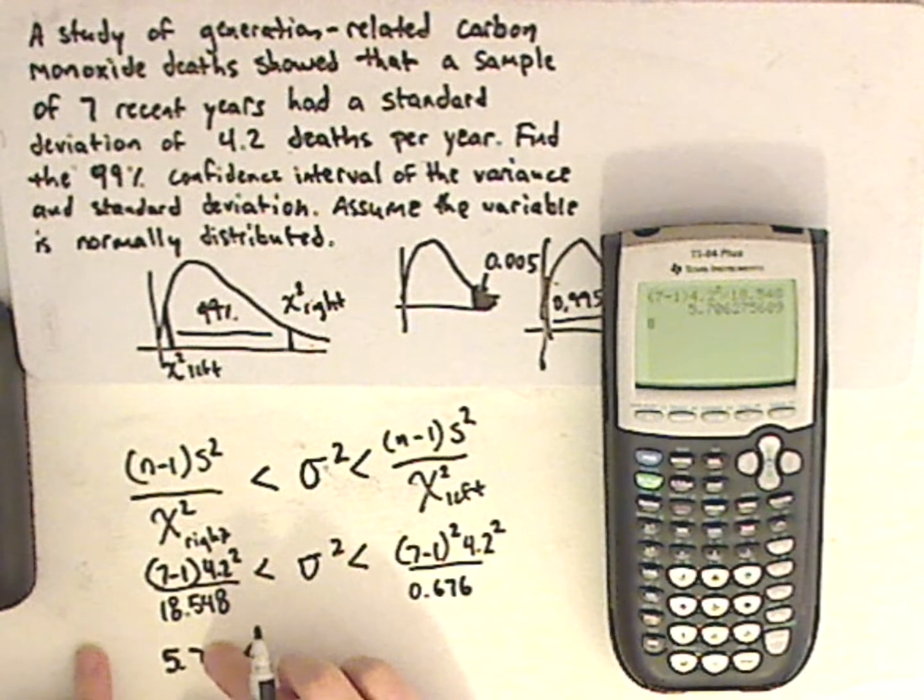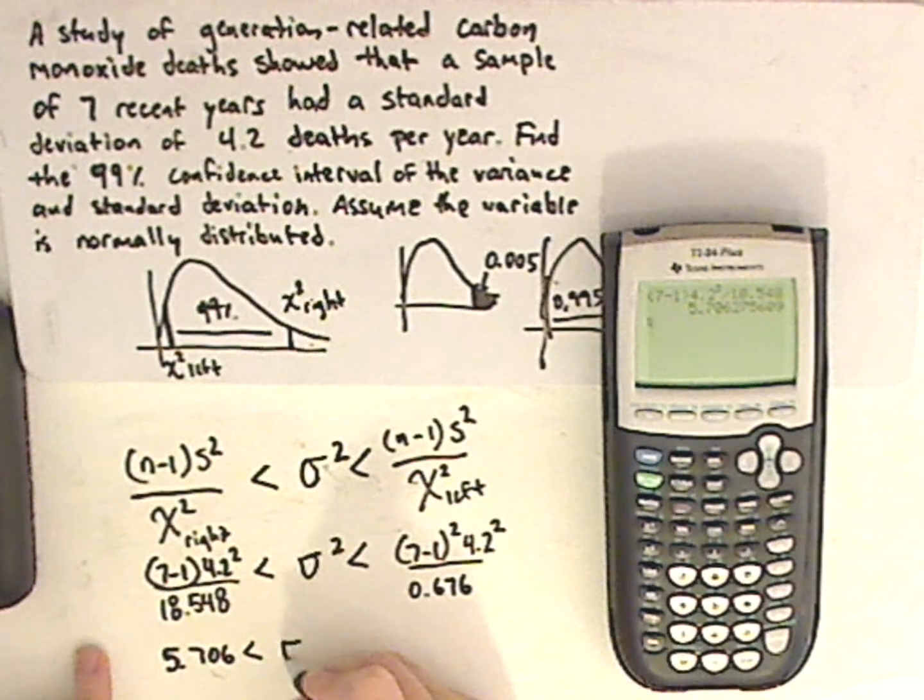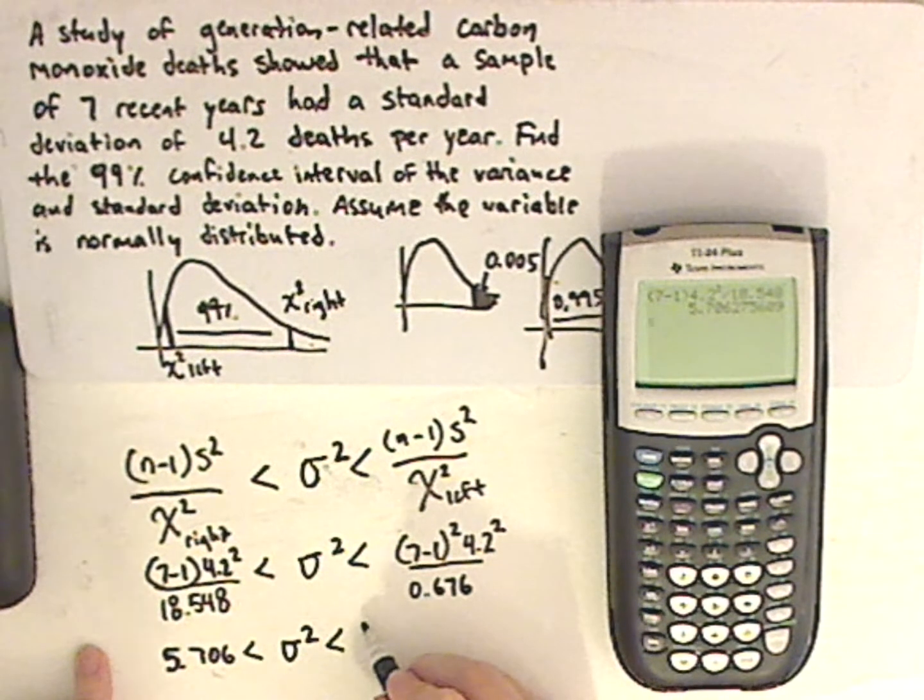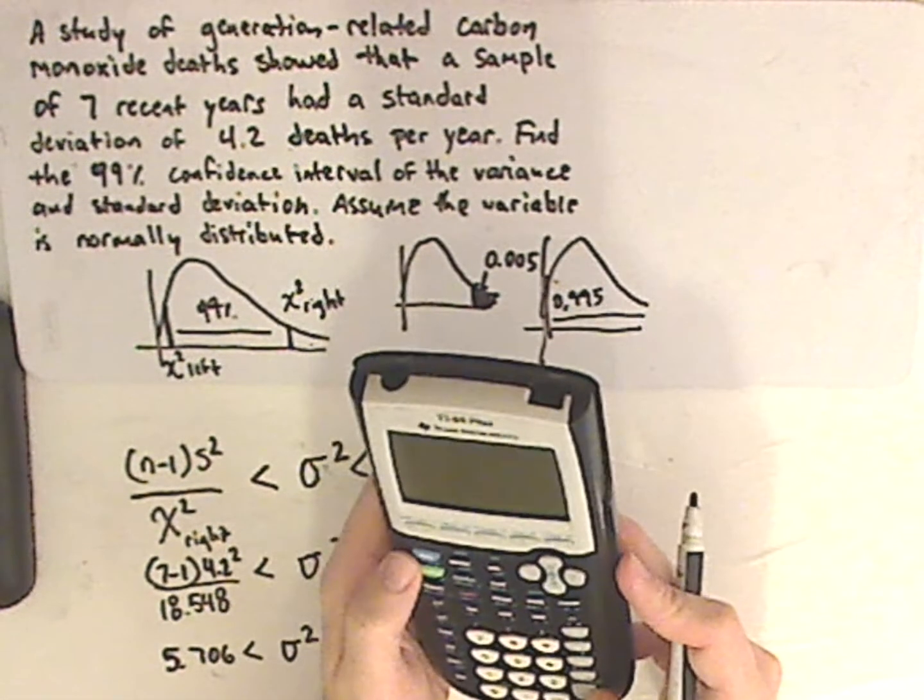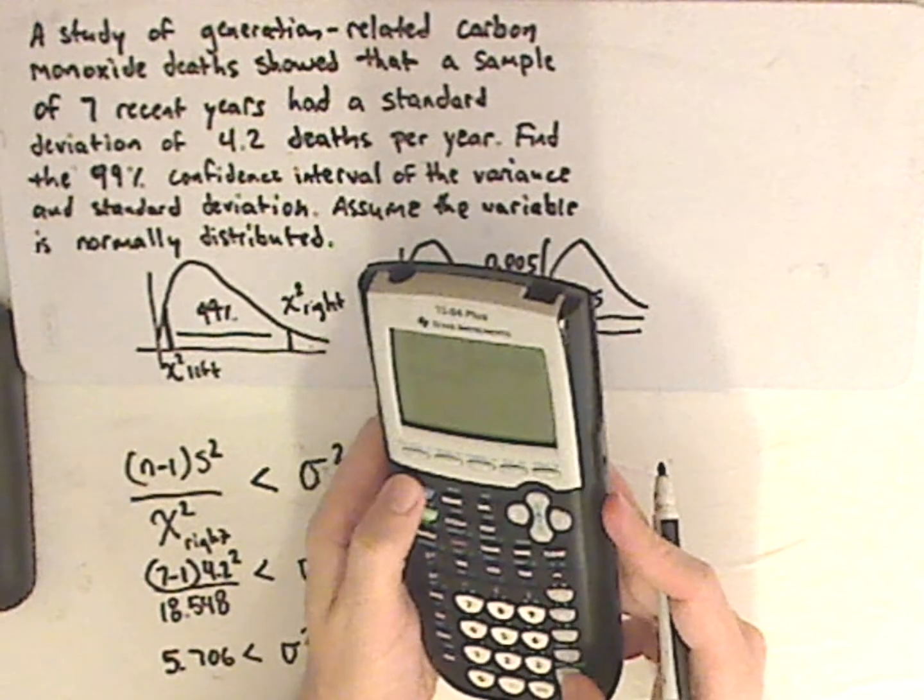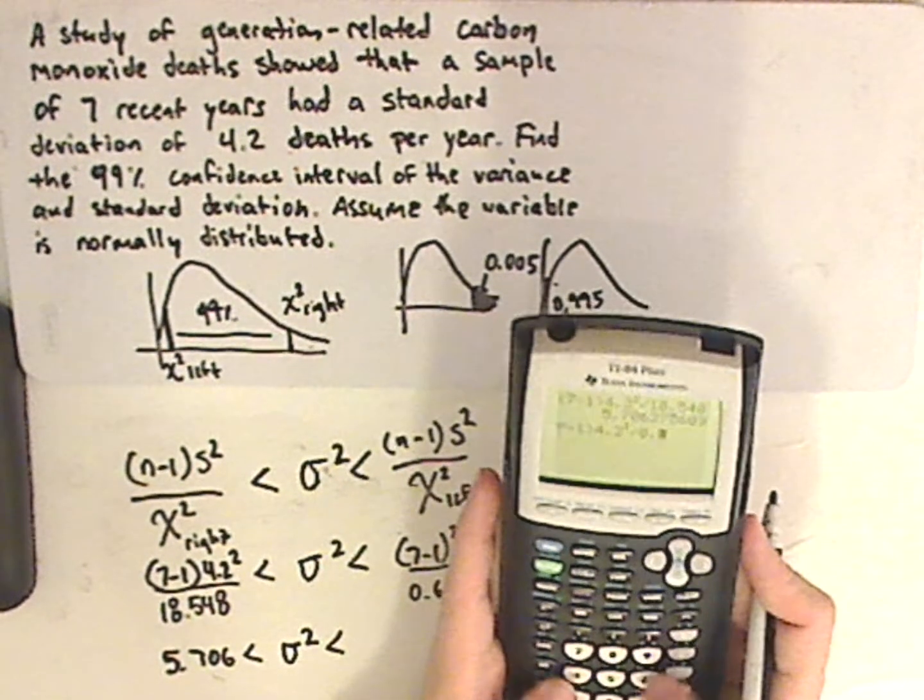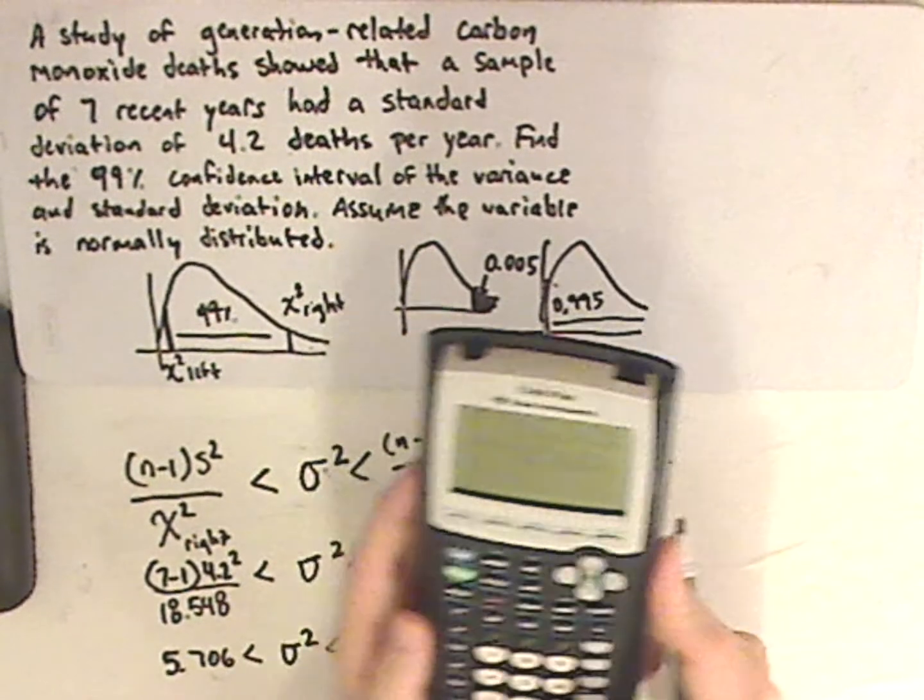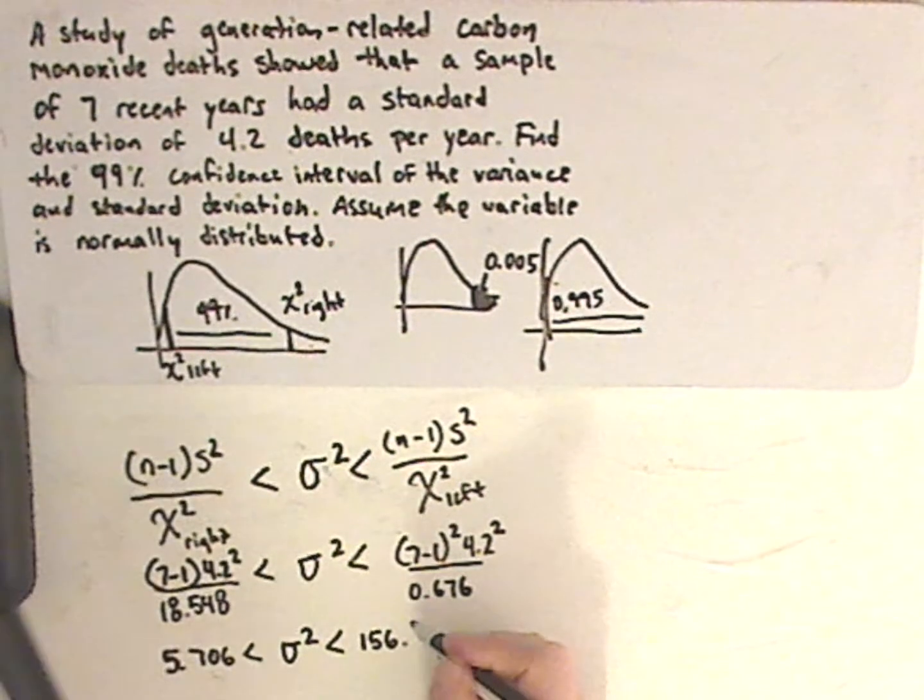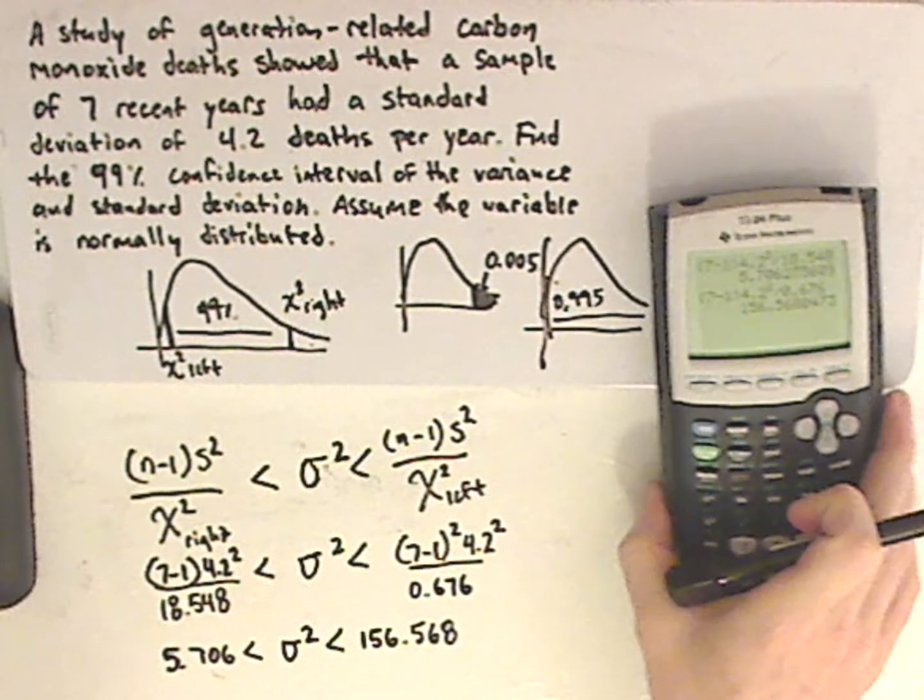Actually, let me do an extra one because this is for the variance. And then I have the other one. Now, all you need to do is delete. What I pushed was 2nd and then entry, and that just repeats the last line. And then for my denominator, it's 0.676, which gives me 156.568. So, that's my confidence interval for my variance.